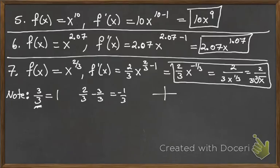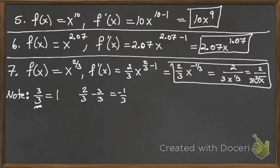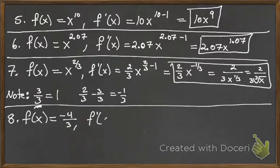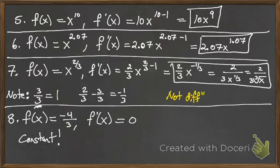The graph of x^(2/3) has a cusp — a sharp corner at 0 — so it's not differentiable at x = 0. You can see there's an x in the denominator of the derivative, confirming this. Differentiability implies smoothness; a sharp corner means it's not differentiable there.